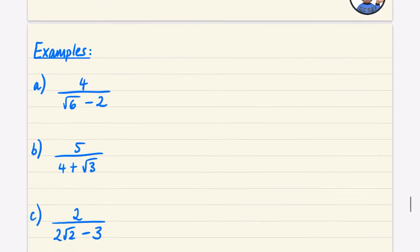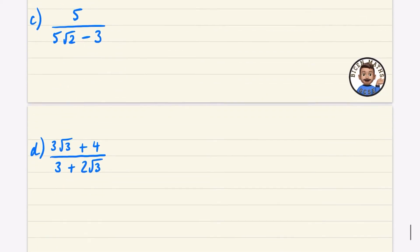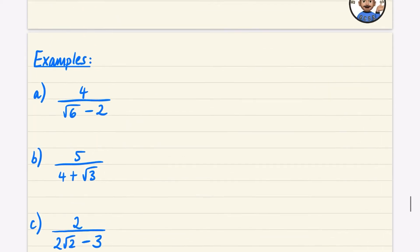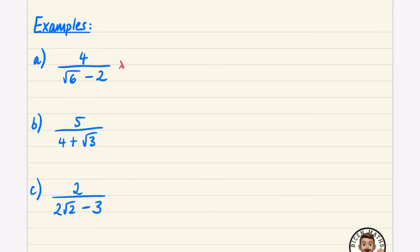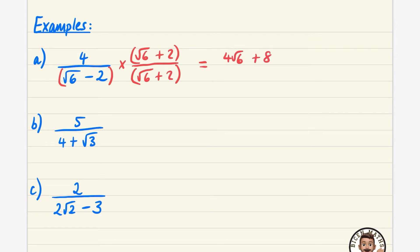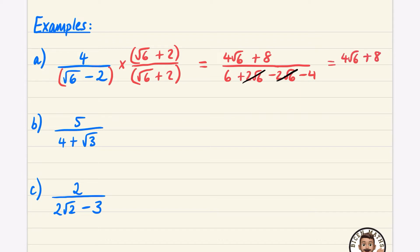Let's apply this with some examples. For this first one the conjugate is going to be root six plus two. I like to put brackets everywhere. The numerator is the four times root six and the four times two. The denominator gives root six times root six, then root six times two which is plus two root six, then minus two root six, and minus two times plus two which is minus four. As expected, those middle terms cancel, giving us four root six plus eight over six take away four, which is two.